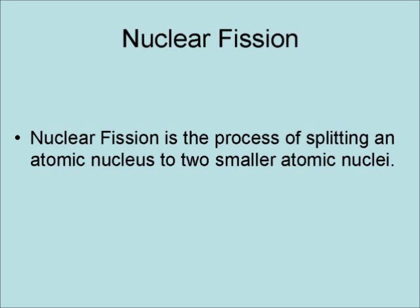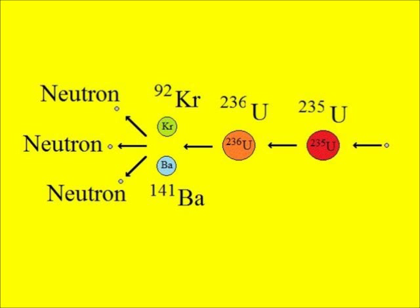Nuclear fission is the process of splitting an atomic nucleus into two smaller atomic nuclei. Uranium fission, which is the most common nuclear fission used in nuclear reactors, starts with a neutron colliding with a uranium-235 atom, turning it into an energetic uranium-236 atom.